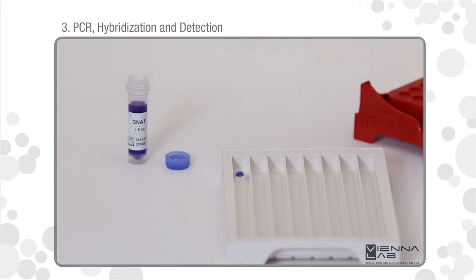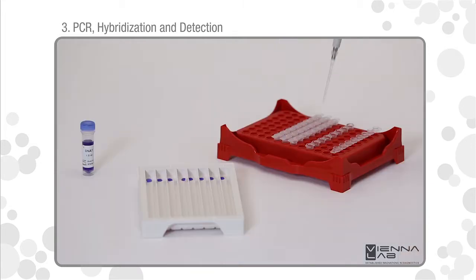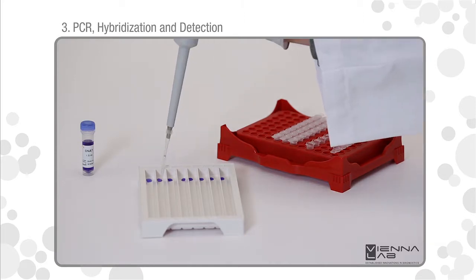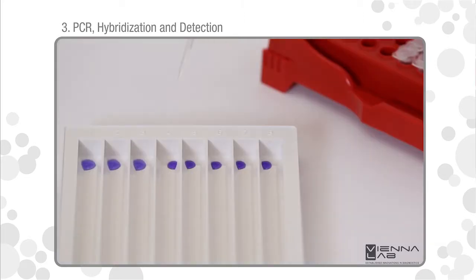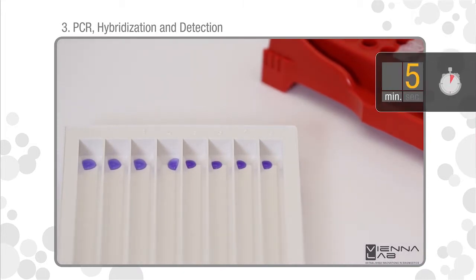Pipet DNAT into the lower corner of each lane to be used in the typing trays. Add amplification product into the corresponding drop of DNAT. Mix thoroughly with the pipet. The solution will remain blue. Let stand for 5 minutes at room temperature.